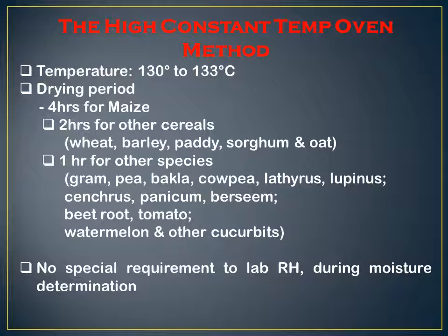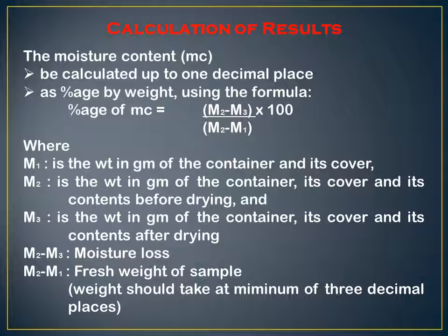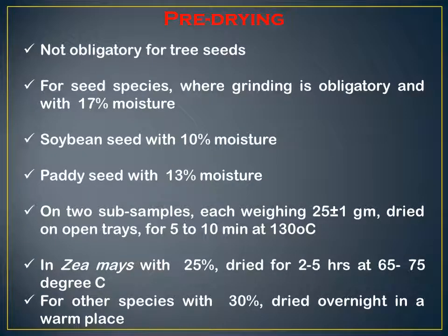The moisture content percentage is calculated using the formula: (M2 − M3) ÷ (M2 − M1) × 100, where M1 is the weight in grams of the container and its cover, M2 is the weight in grams of the container, cover, and contents before drying, and M3 is the weight in grams of the container, cover, and contents after drying. M2 minus M3 represents the moisture loss, and M2 minus M1 represents the fresh weight of the sample.